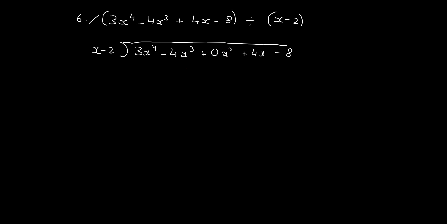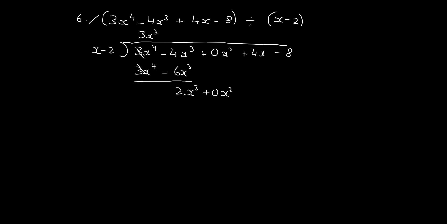We're just going to be dividing the x — the 2 is just going to come along for the ride. So x into 3x to the 4 is 3x cubed, because I divided 3x to the 4 by x. Now we're going to multiply 3x cubed by x minus 2 and put it down here. So I've got 3x to the 4 minus 6x cubed. When I subtract this, these cancel out and I've got 2x cubed. Then I'm going to bring my 0x squared down here and start the whole process again.